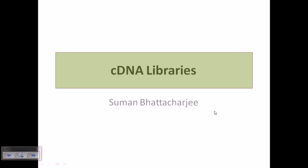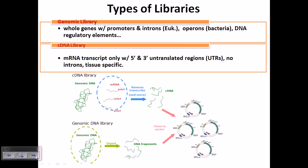Welcome back. In this video we'll be talking about cDNA libraries. Before understanding cDNA libraries, you must understand DNA libraries. There are actually two different types: one is the genomic library, and the other is the cDNA library. These libraries are representations of genes inside the cell — the genomic library represents whole genes including promoters, introns in eukaryotic systems, operons in bacterial systems, and DNA regulatory elements.